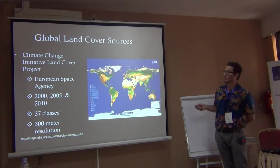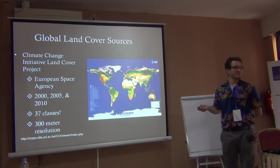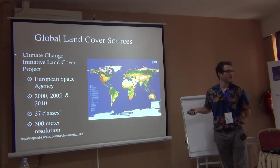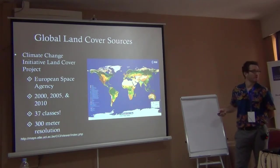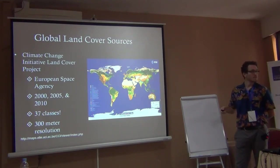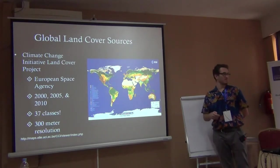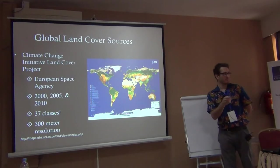The European Space Agency has produced a really nice global land cover map through their Climate Change Initiative project — this is the one we'll use in exercise today. They have three different time periods, so you can calculate change over ten years or five years, and 37 different classes. The resolution is a little lower — 300 meters — so we can only distinguish 300-meter parcels of land.